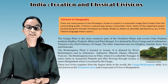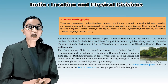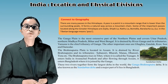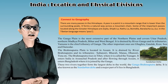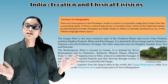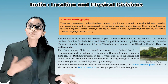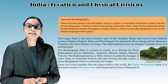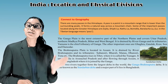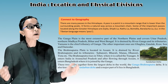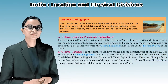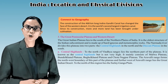The Brahmaputra rises in Tibet, where it is called the Tsangpo. It enters India in Arunachal Pradesh and after flowing through Assam, enters Bangladesh, where it is joined by the Ganga. These two rivers together form the largest delta in the world - the Ganga-Brahmaputra Delta, also known as the Sundarbans Delta. A major part of it lies in Bangladesh.